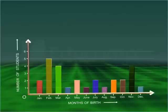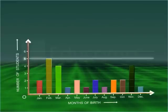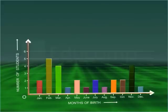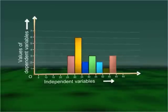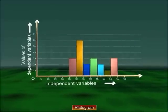From the bar graph you can easily make out that the number of students born in January is two. Likewise, there are five students born in February. Similarly, you can tell the number of students born in different months. By looking at the heights of the bars, you can easily tell that the maximum number of students are born in February and the minimum number of students are born in April, June, August, and December.